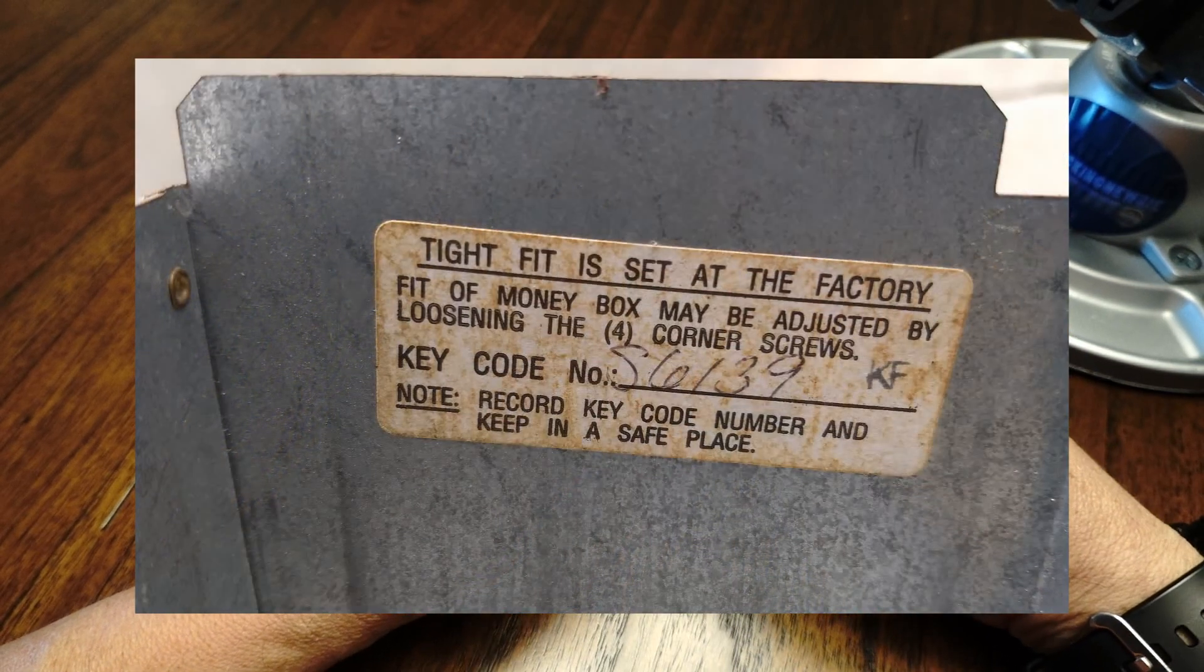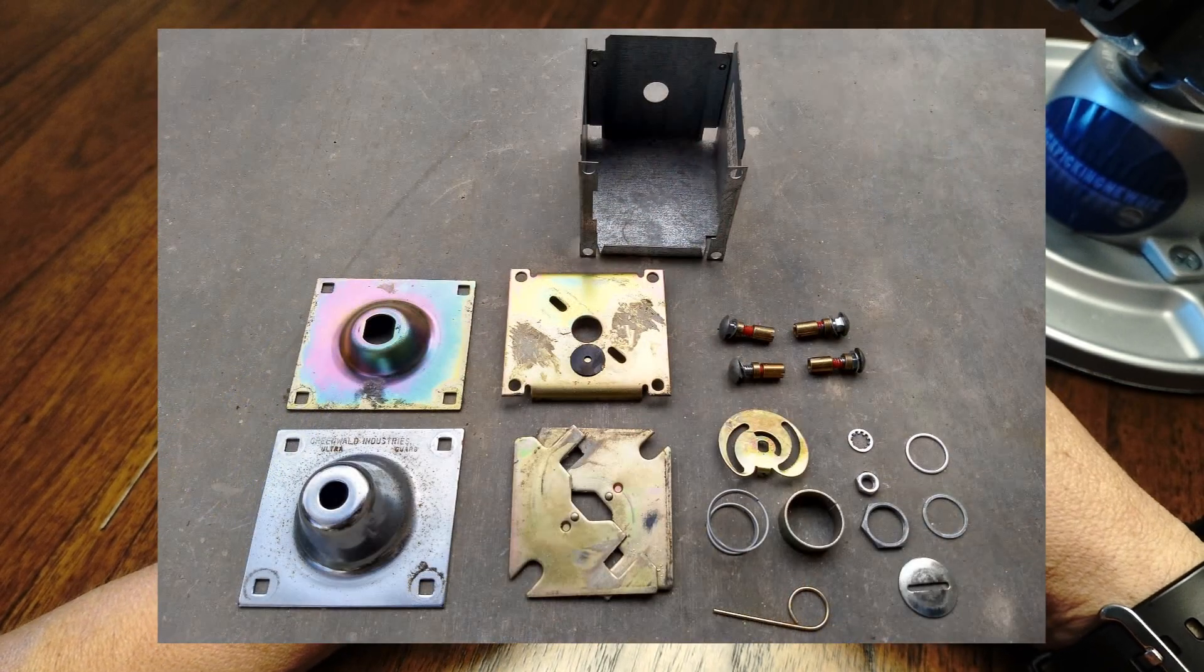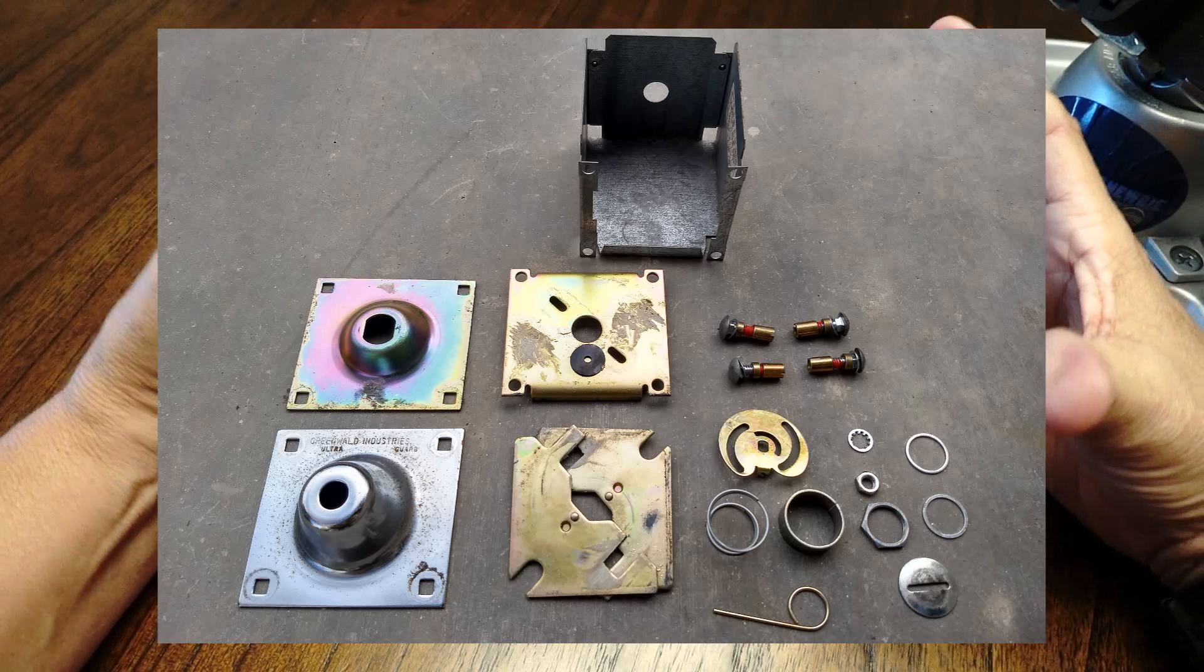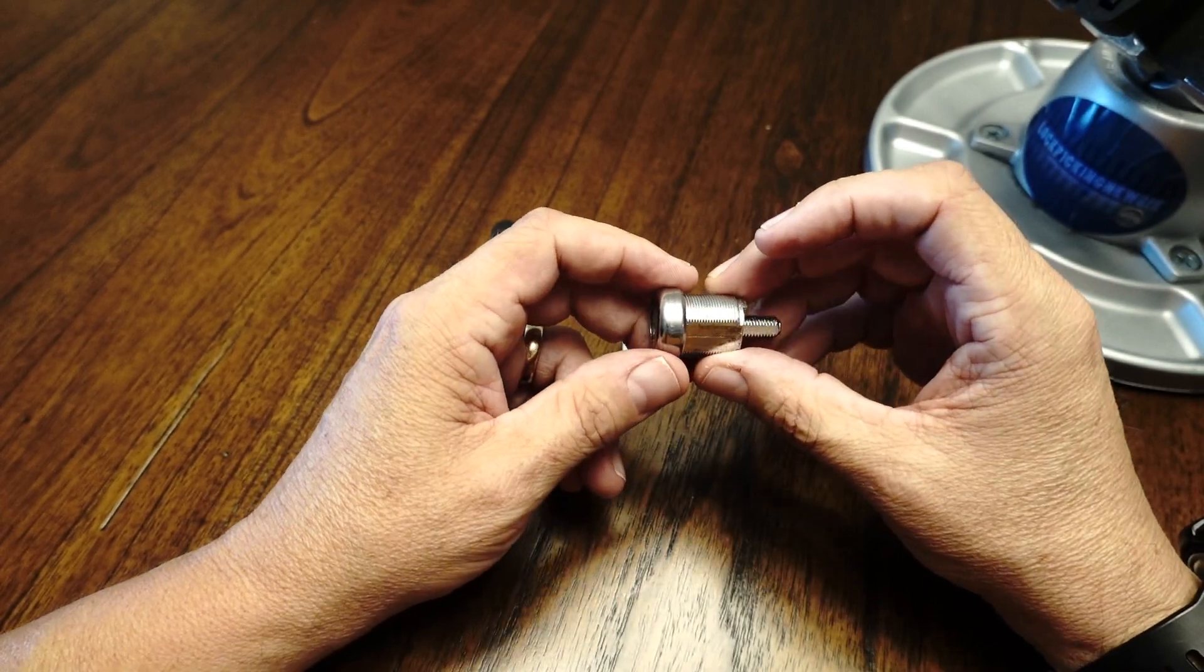Mr. L manages properties and he ends up pulling a bunch of locks off of properties. So he pulls out this bag with this metal box in it. We figured out what it is and got it home.